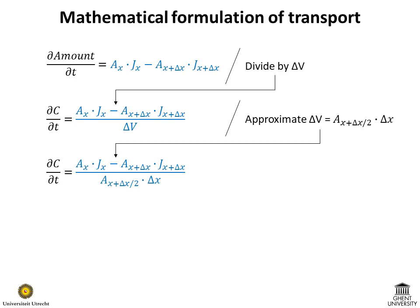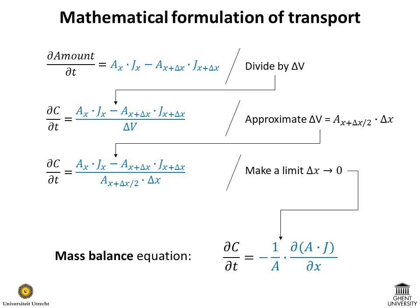Finally, we approximate the volume by a product of the area through the middle of the volume and the length delta x, and assume that the length is infinitesimally small. This yields the general form of the transport term, as shown in blue. Note the minus sign in front of the spatial gradient of the product A times J. We recommend that you pause the video now to digest this result.